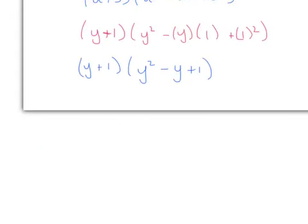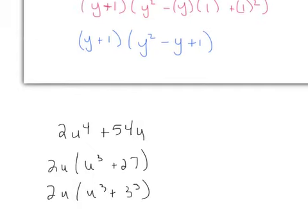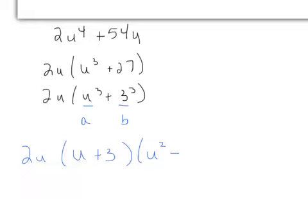Part C: 2u⁴ plus 54u. Neither term looks like a cube at first, but factor out a 2u to get 2u times (u³ plus 27). Rewrite as 2u times (u³ plus 3³), so a is u and b is 3. This is a sum of cubes, so carry down the 2u and apply the formula: 2u times (u plus 3)(u² minus 3u plus 9). Your homework is from Section 4.5 and the review from page 72.